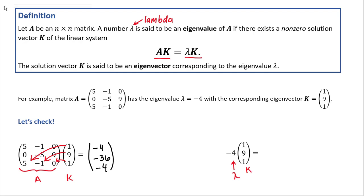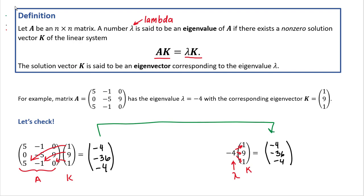Now let's verify the right-hand side of the equality. We have to multiply lambda, negative 4, by vector k. To multiply a constant by a vector, we simply multiply that constant by each element of the vector. We obtain vector negative 4, negative 36, negative 4. As you can see, we got the same result in both cases. This means the equality from the definition holds true, confirming that lambda equals negative 4 is the eigenvalue for that matrix and the given vector k is the corresponding eigenvector.